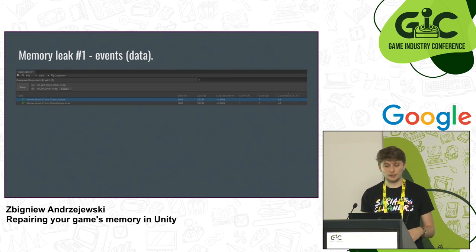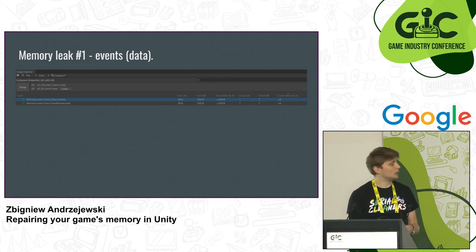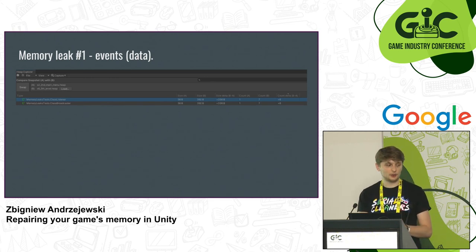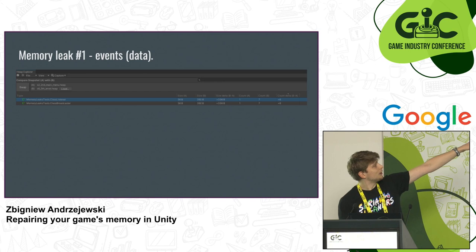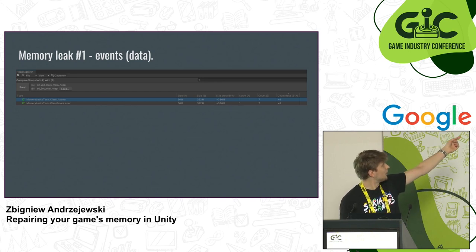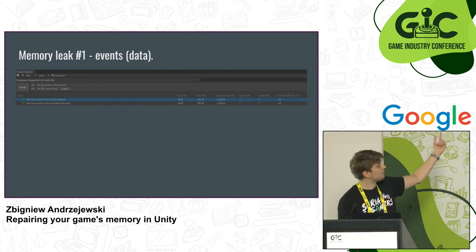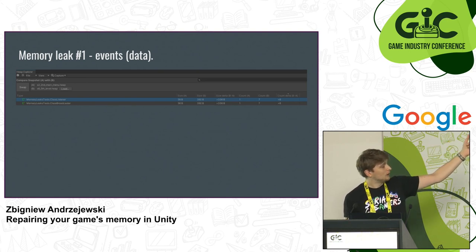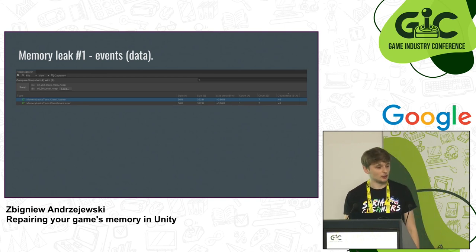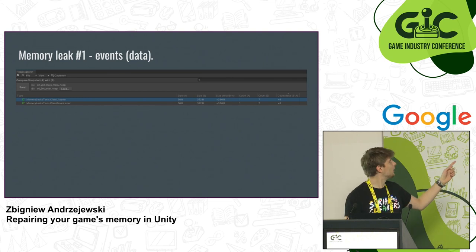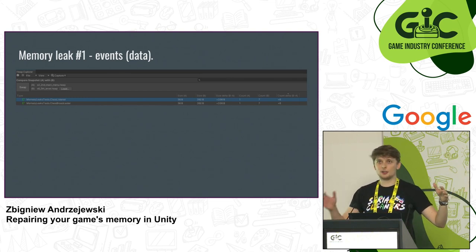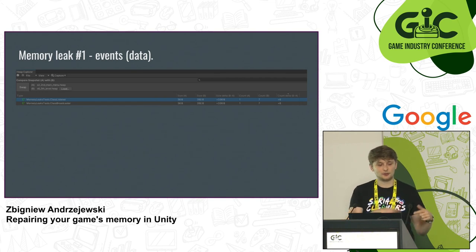I implemented such a problem in a test scene. When you compare snapshots between one place in the game and another — the first snapshot shows one count each of ClassListNL and Broadcaster, while the second snapshot, taken after the fifth level, shows plus six such objects stored in memory indefinitely. There's plus six, not plus five, because there's also one stored for the actual asset, not the instance.